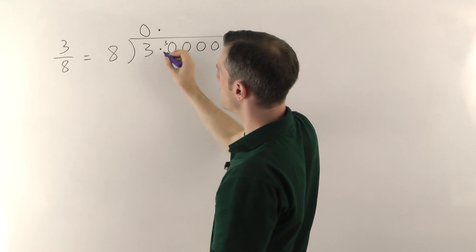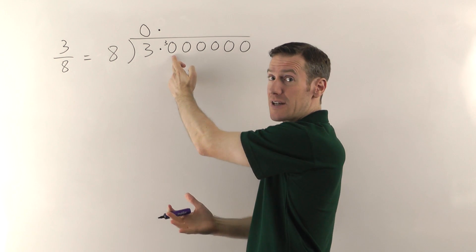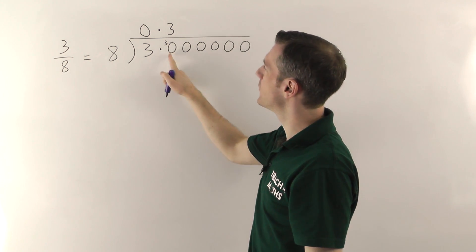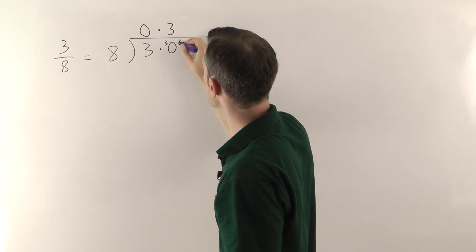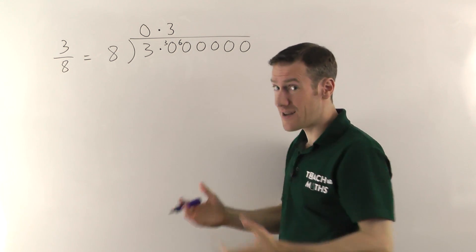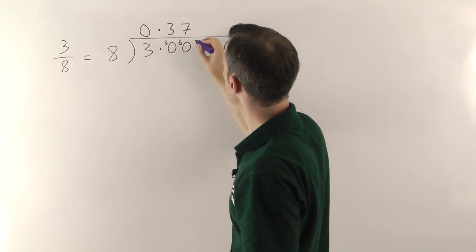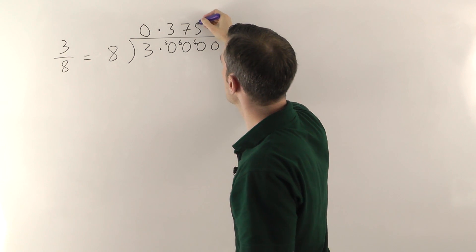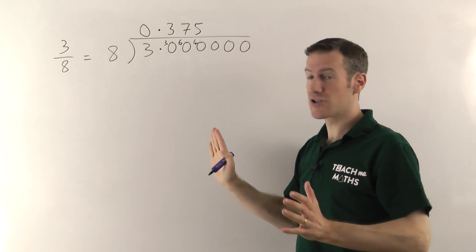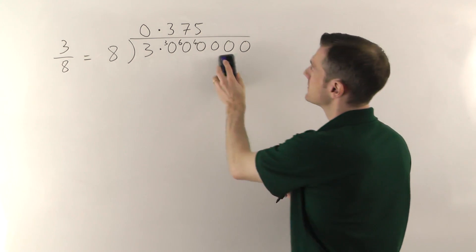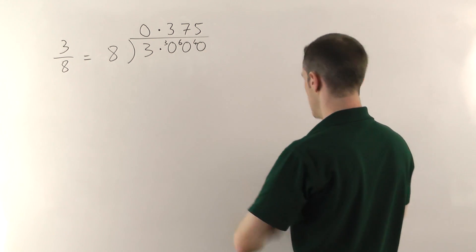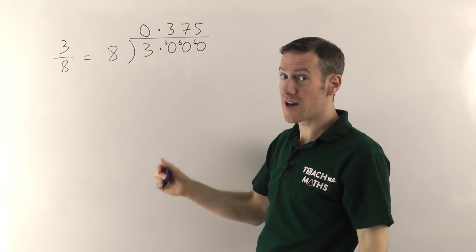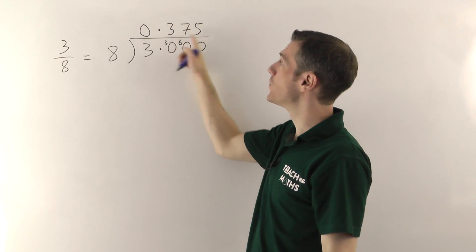Make sure you put a decimal point above the one below. Then you're saying how many eights go into 30 — that's going to go 3 times. 3 eights are 24, and from 24 up to 30 the remainder is 6. How many eights in 60? Well 7 eights are 56, remainder 4. How many eights into 40? That goes 5 times, and the remainder is now 0. When you have a 0 remainder, you can just stop. So 8s into 3 go 0.375 times — 3 eighths as a decimal number is 0.375.